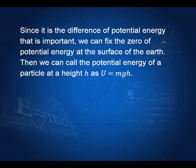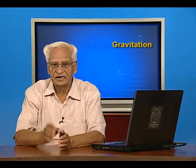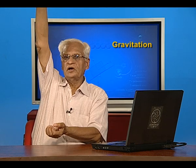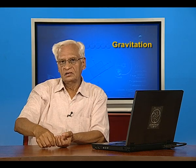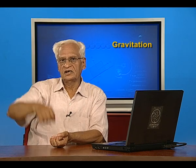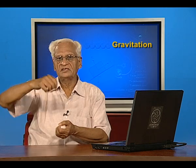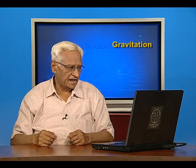We can fix the zero of potential energy at the surface of the earth, then we call the potential energy of a particle at height h as u equal to mgh. That is, if I take a particle to height h from the surface it gains energy mgh.